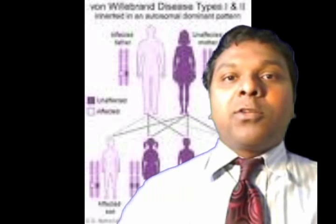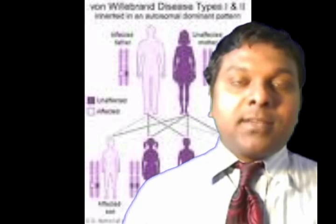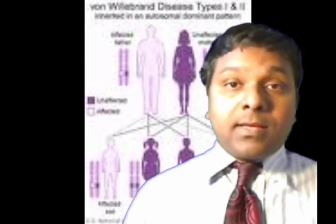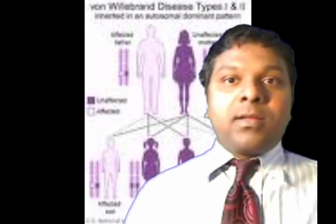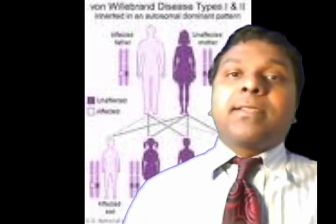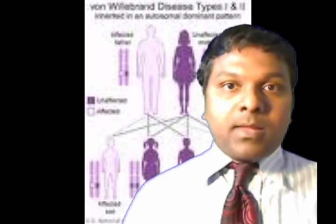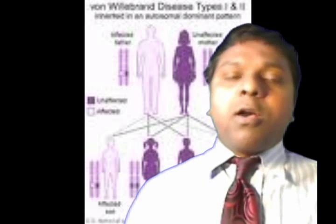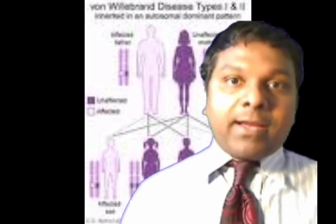I want to talk a few minutes about von Willebrand's disease. Von Willebrand disease is the most common congenital bleeding disorder, and it affects about one to two percent of the population. It is a group of disorders caused by abnormalities of von Willebrand factor.